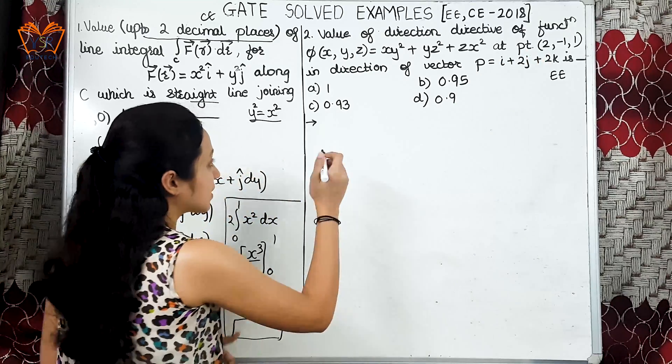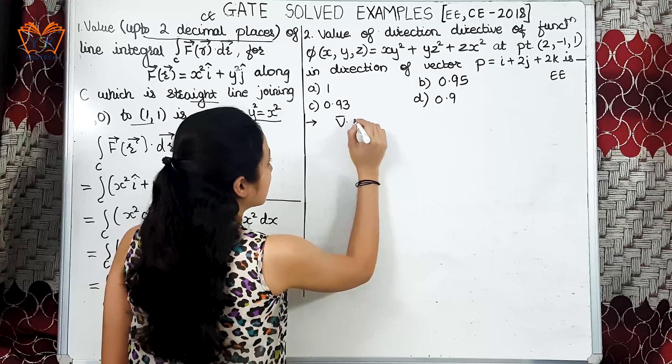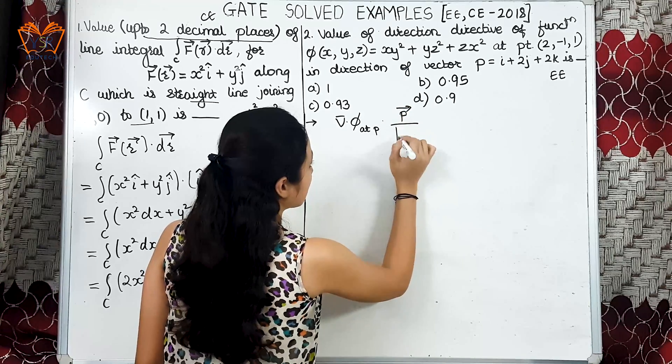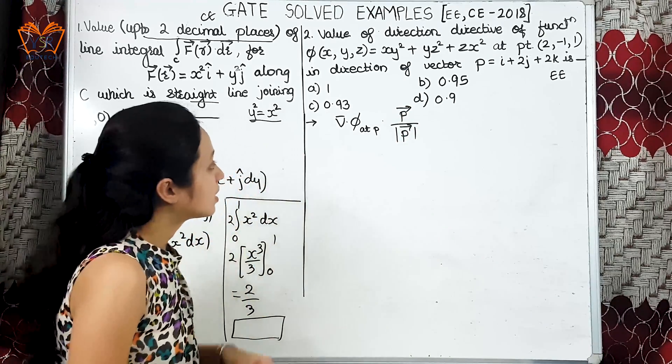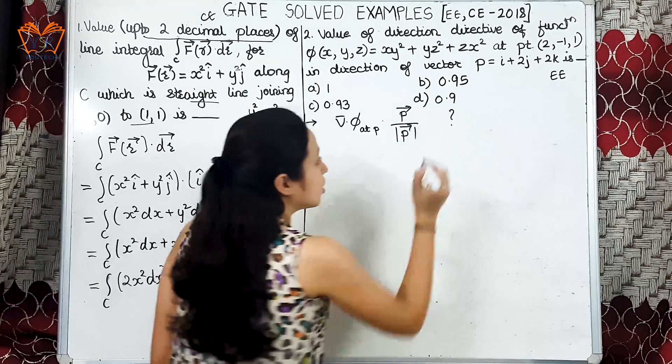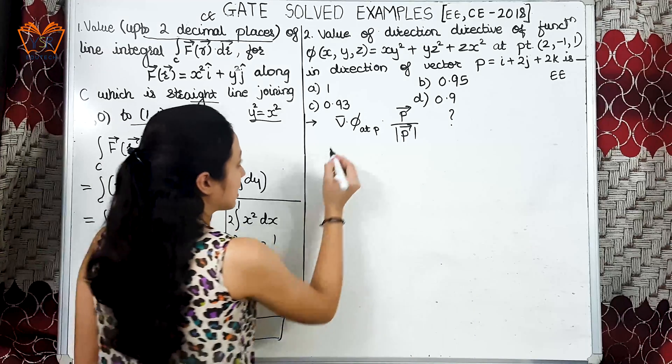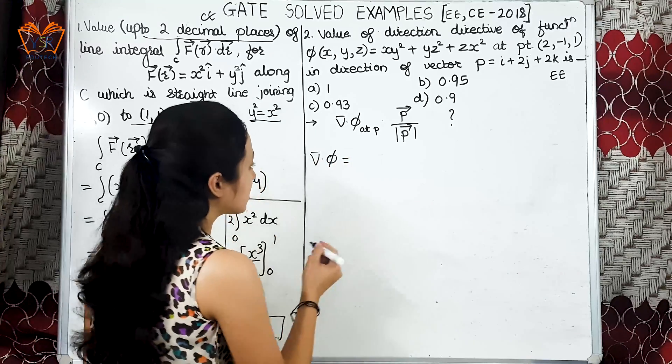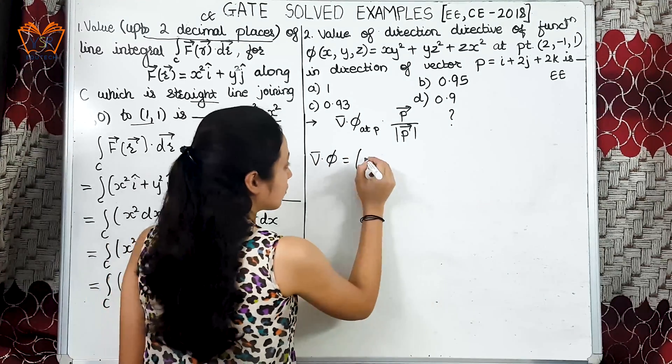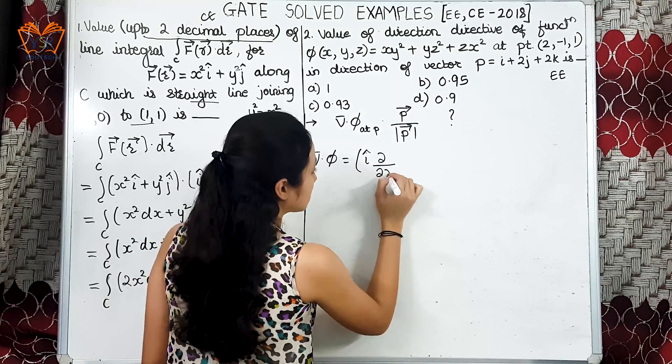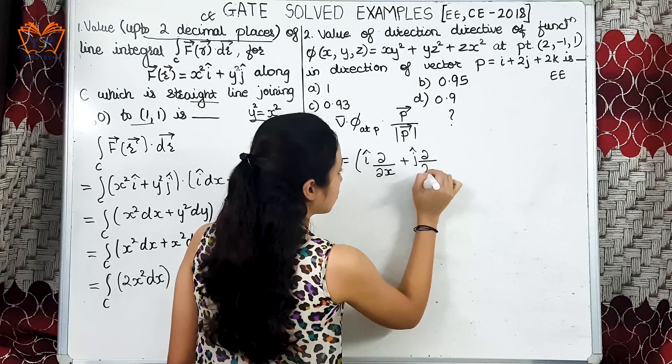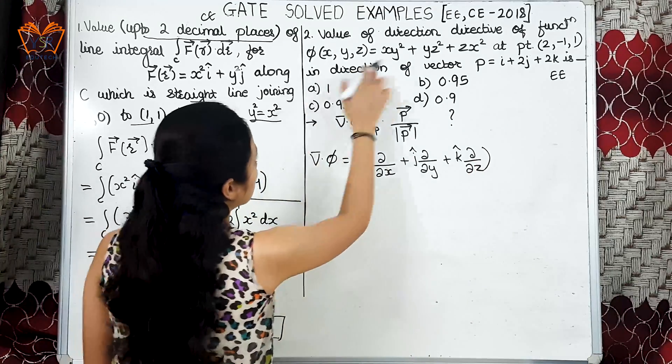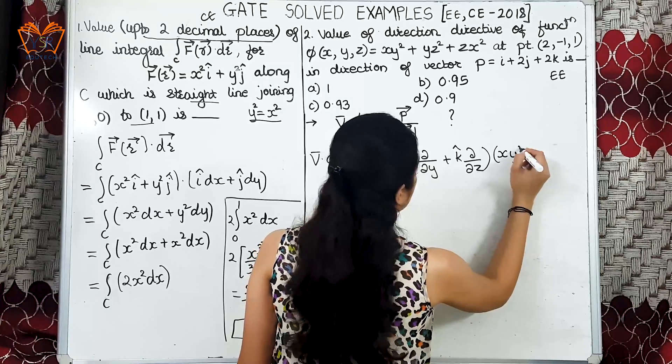Now value of directional derivative of the given function at the given point in the given vector will be del dot phi at given point into p vector divided by magnitude of p vector. This is the question that they have asked. What we'll do: we'll find out the values of each one and substitute that. First we'll go for this part, del dot phi. We know what is del. We have already studied it in one of your video tutorials: i cap del by del x plus j cap del by del y plus k cap del by del z. And phi given to us is xy square plus yz square plus zx square.